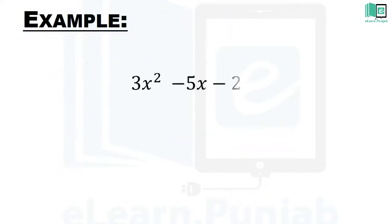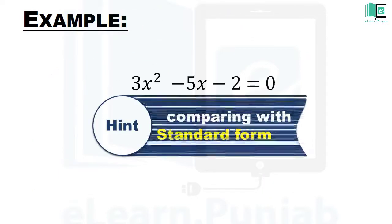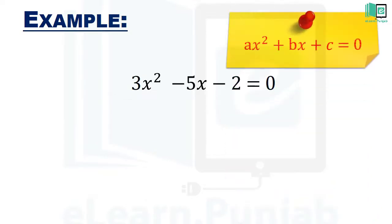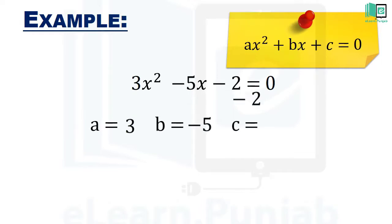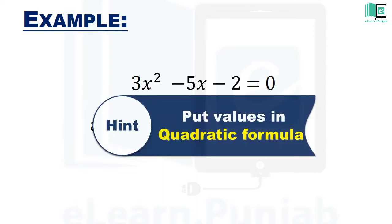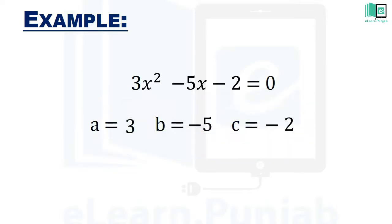आईए अब पहली equation को देखते हैं। इसे standard form से compare करने के बाद हम पहले A, B और C की values लिखेंगे। हमें A की value 3, B की value minus 5 और C की value minus 2 हासल होगी। इस equation का root निकालने के लिए हमें सिर्फ इन values को quadratic formula में तबदिल करना है।